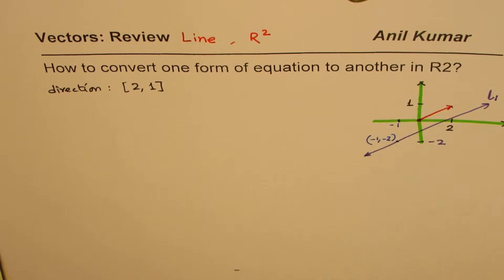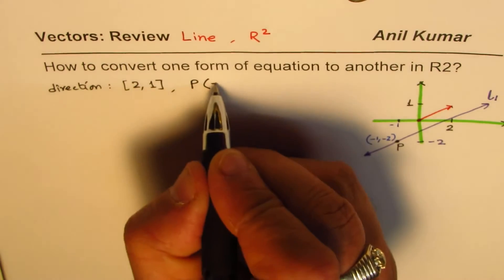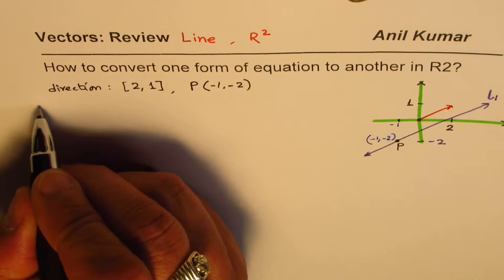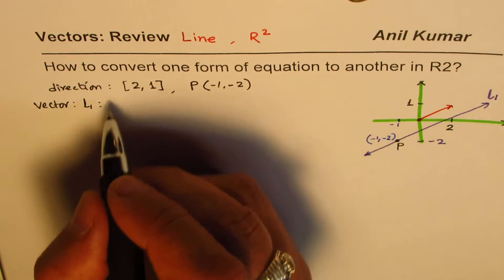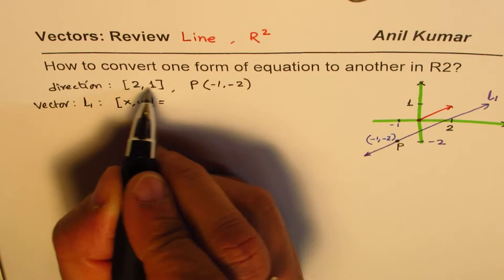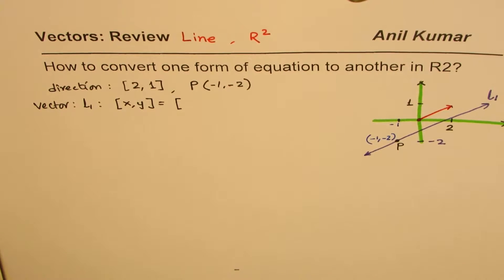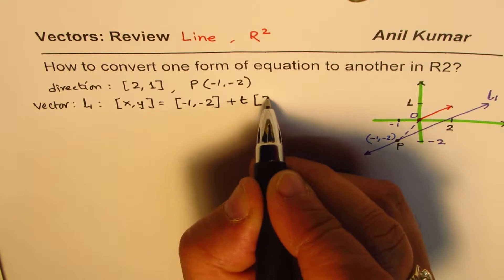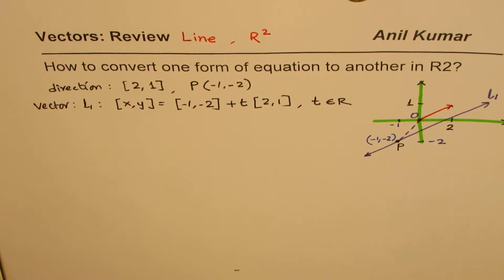How do we find it? Since we know the direction and we also know a point on this line — point P is given to us as (minus 1, minus 2) — we can write the equation of this line in different forms. One of them is the vector form. The line L1 can be written as the set of (x, y) coordinates. Since we know the point is (minus 1, minus 2), OP is the position vector, which we write as (minus 1, minus 2), plus the parameter T times the direction (2, 1), where T belongs to real numbers. So that becomes the vector equation of a line in R2.